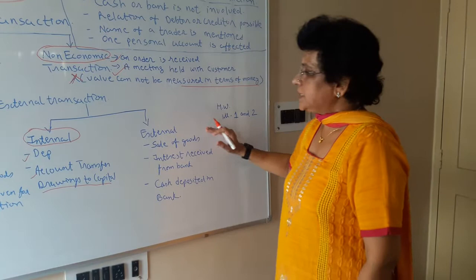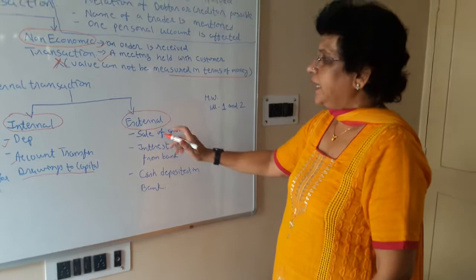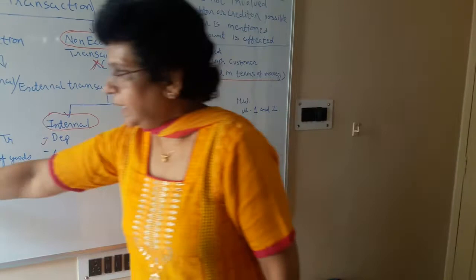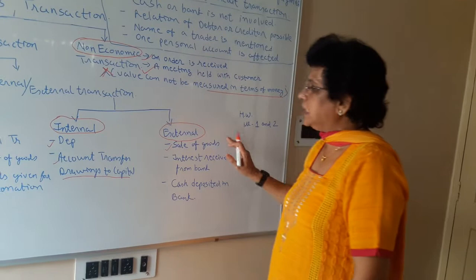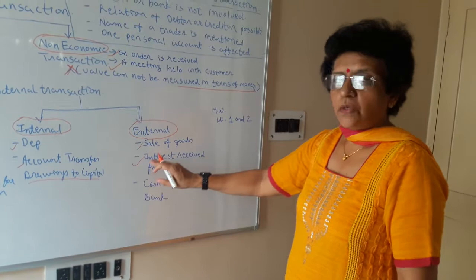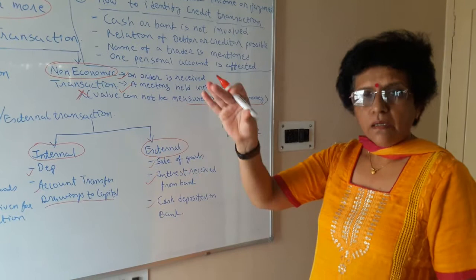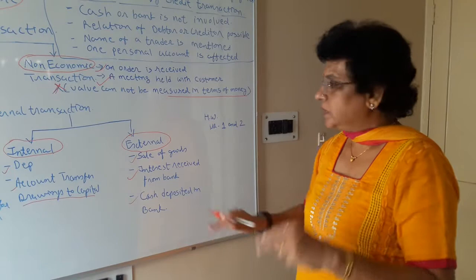The next is external entries — entries which occur due to an external or third party involved in the business. The first is sale of goods: as you are selling goods, it may be in the form of cash or credit, but sale of goods involves an external party. Next is interest received from bank: when you have your account with the bank, the bank gives you interest — one party is the bank, the other is your interest income, so two folds are there. Cash deposited in the bank: you are giving your money to the bank for investment purposes — cash goes out, bank becomes the receiver — two folds are there.